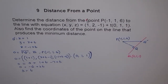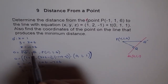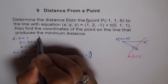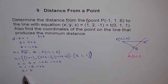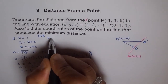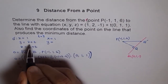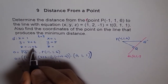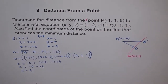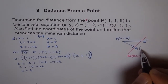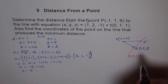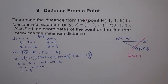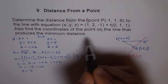Now that T equals 3, we can find our point Q. Plugging T equals 3 into Q': X equals 1, Y equals 2 plus 3 which is 5, and Z equals minus 1 plus 3 which is 2. So the coordinates of point Q are (1, 5, 2). That's the point on the line that produces the minimum distance.